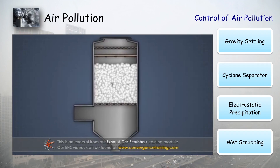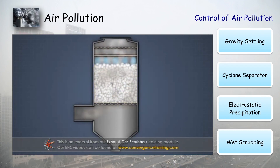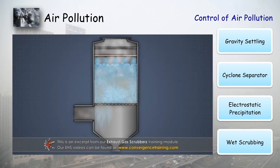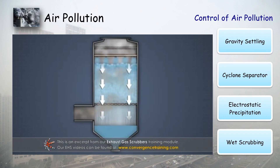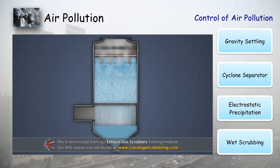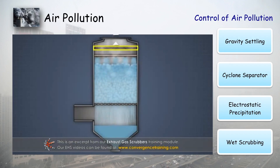Finally, wet scrubbing. In wet scrubbing there is a chamber filled with stones. We pass dirty gas from the bottom and it moves upward. At the same time we sprinkle water from the top. The stones get a wet surface, and on this wet surface all solid particles stick and can be removed. This is the principle of wet scrubbing.